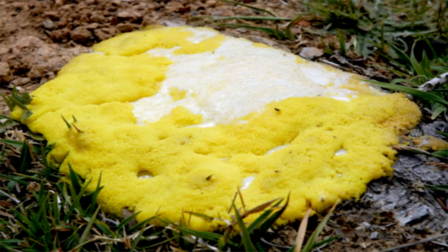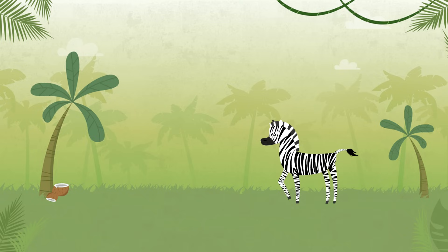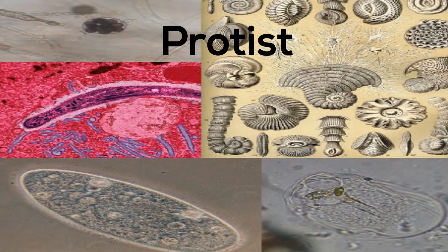As the catch-all kingdom for eukaryotic organisms, if an organism is not an animal, a plant, or fungi, it is most likely thrown into the Protist kingdom. Some protists are heterotrophs, while others are autotrophs.